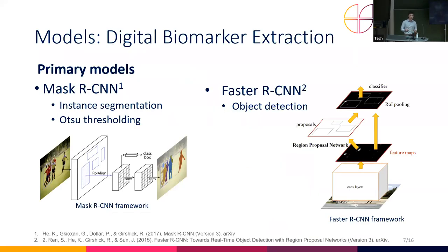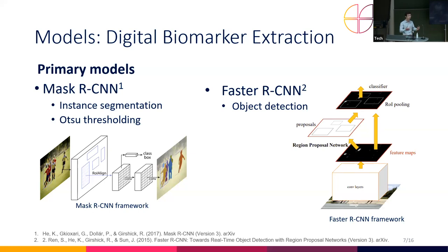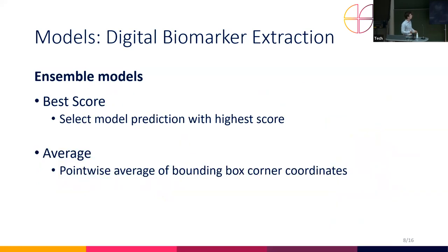We use two primary models to extract the biomarkers. We use an instance segmentation network — the Mask RCNN — which has a segmentation output and an object detection output. We use the segmentation output, applying binary thresholding to get a binary mask. From that we get our CPAR ratio, and from the binary masks we also extract bounding boxes to get CTR. We also use a Faster RCNN, an object detection-only network, which we use only to get the CTR. We use two further ensemble models for CTR: a best-score ensemble where we take the output with the highest confidence rating from Mask RCNN and Faster RCNN, and an average ensemble where we take a pointwise average of the corner coordinates of the bounding boxes.